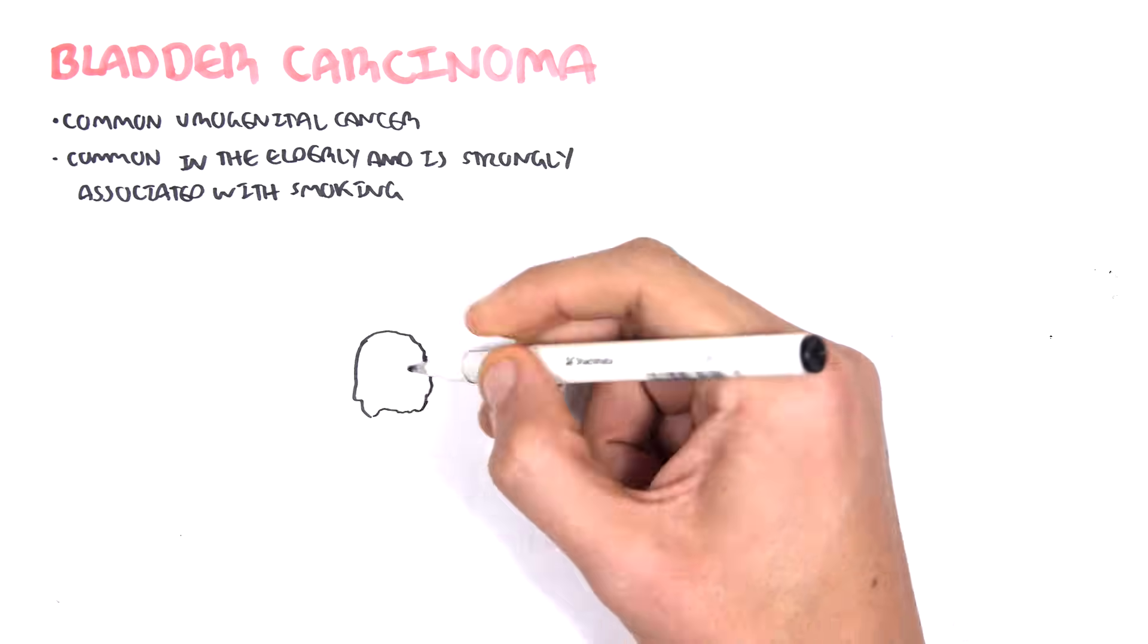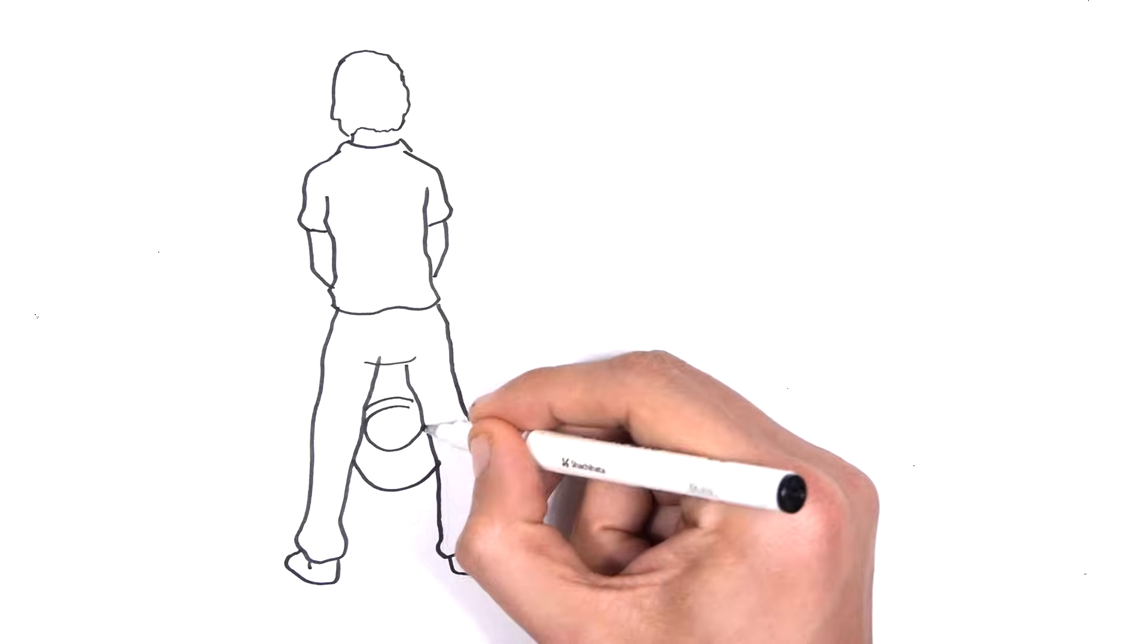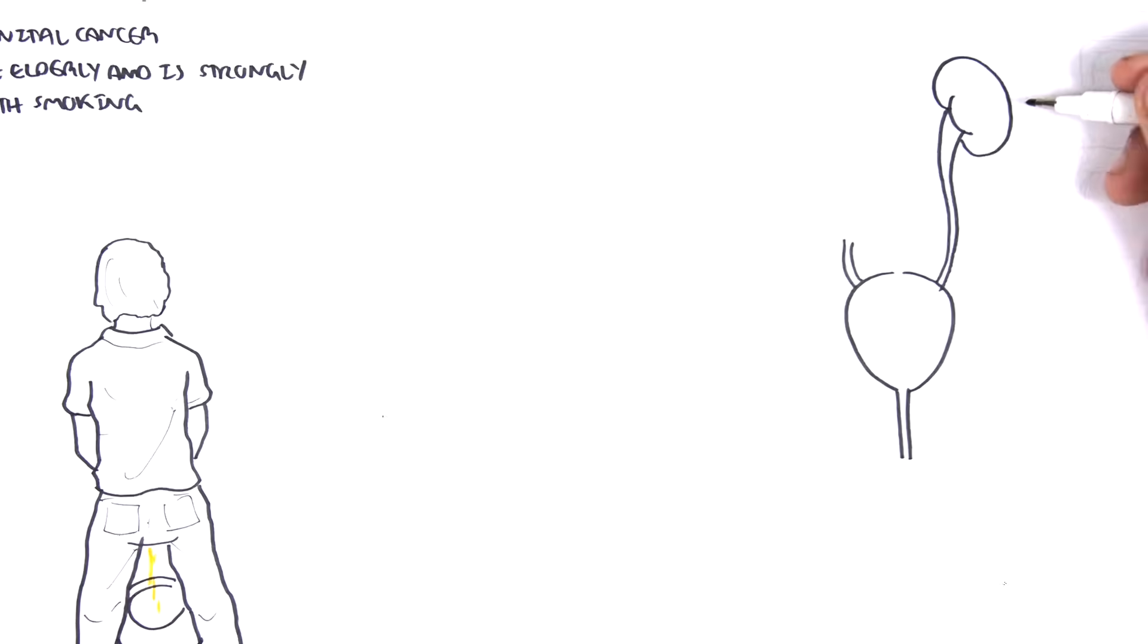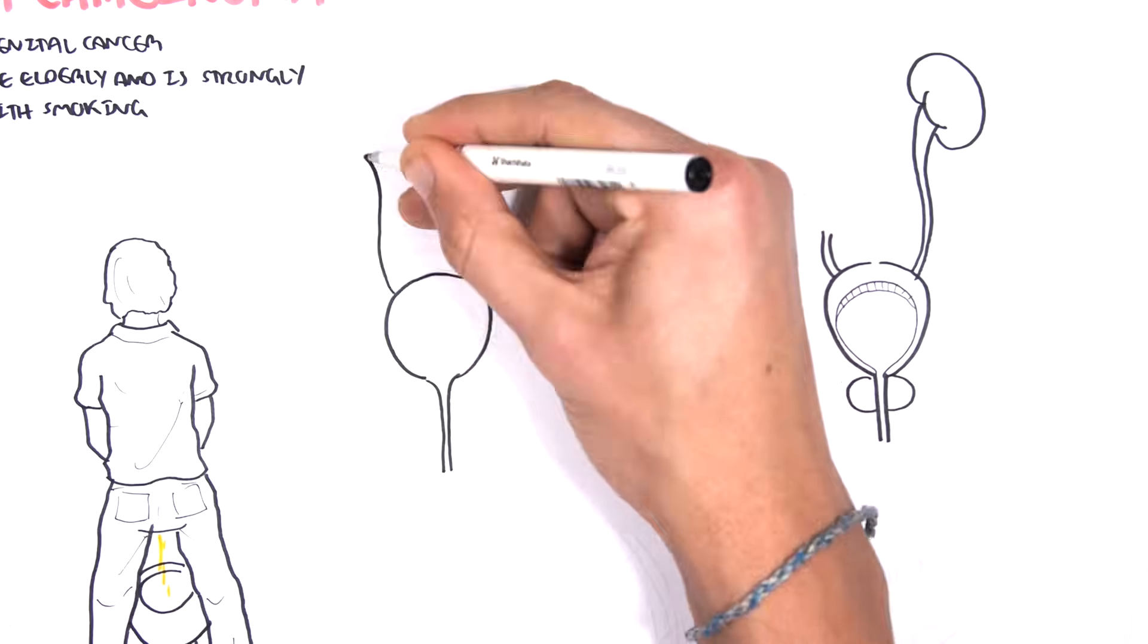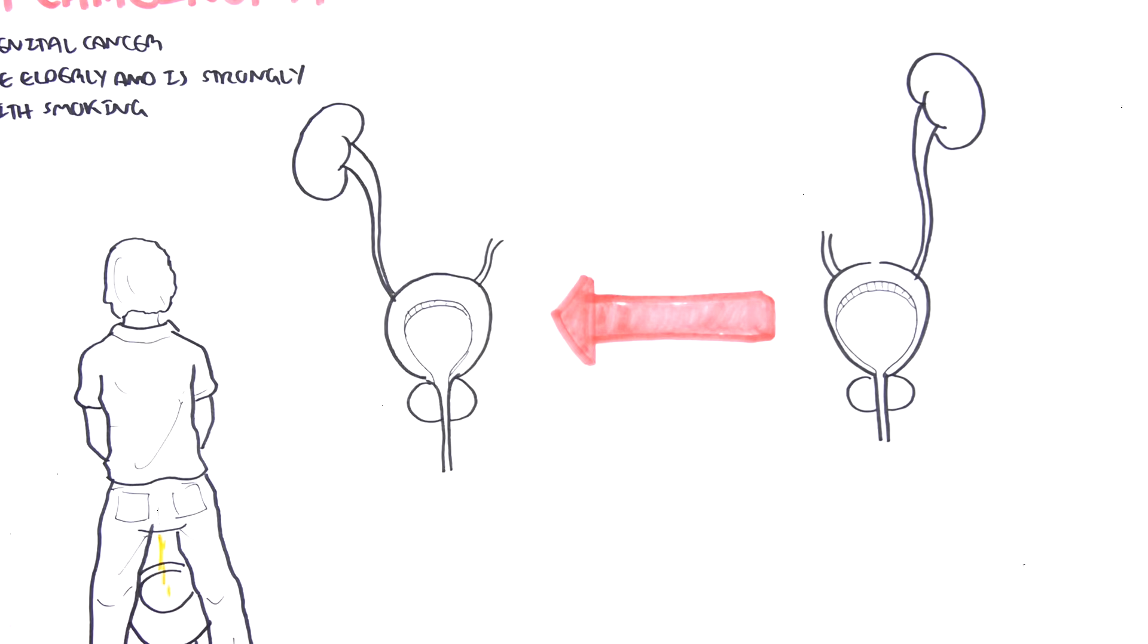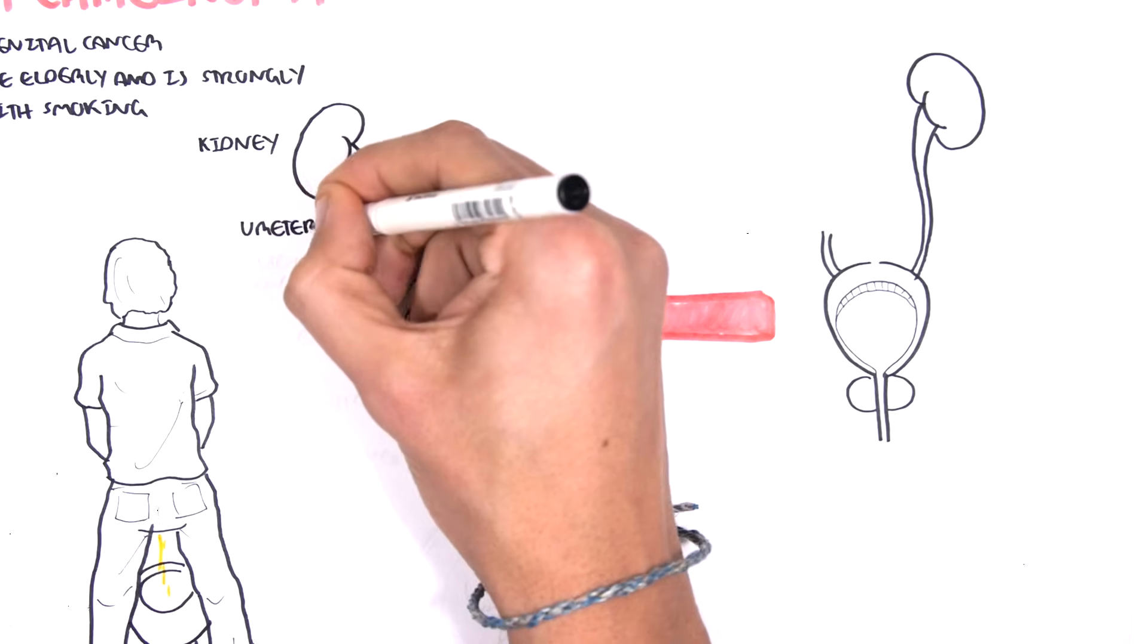It is common in the elderly and is strongly associated with smoking. Here I am drawing a middle-aged person in the toilet urinating. Before going into the presentation of bladder cancer, it's important to revise the anatomy. Here is the kidney, the ureter,